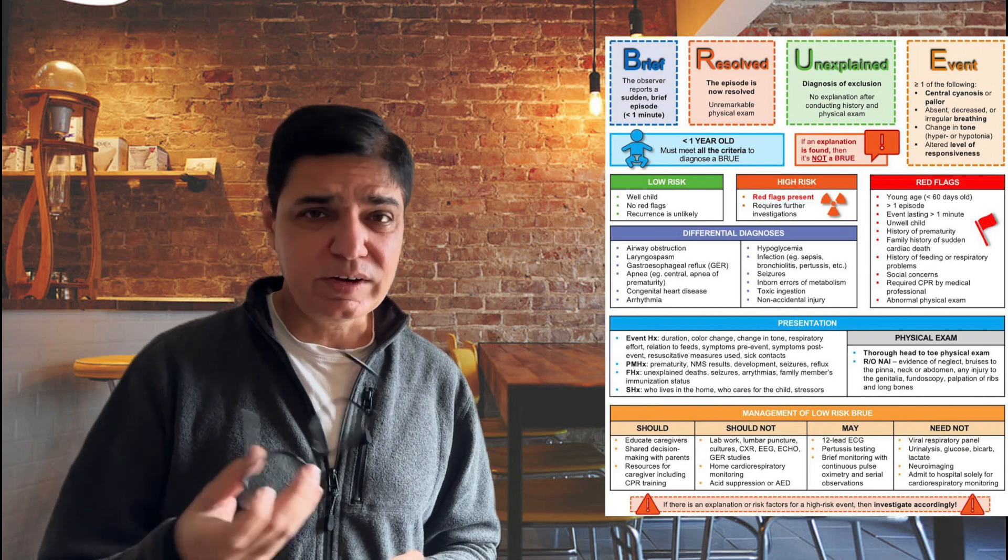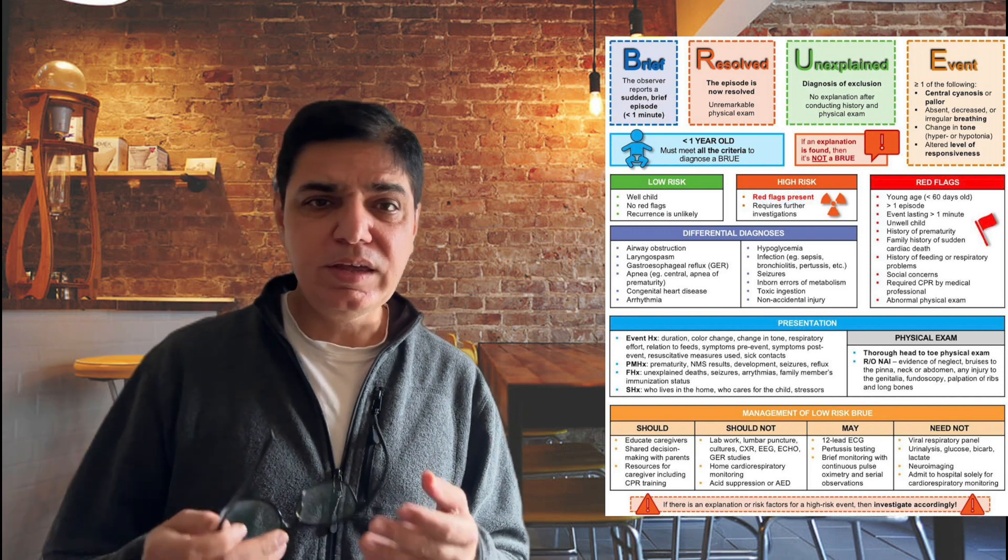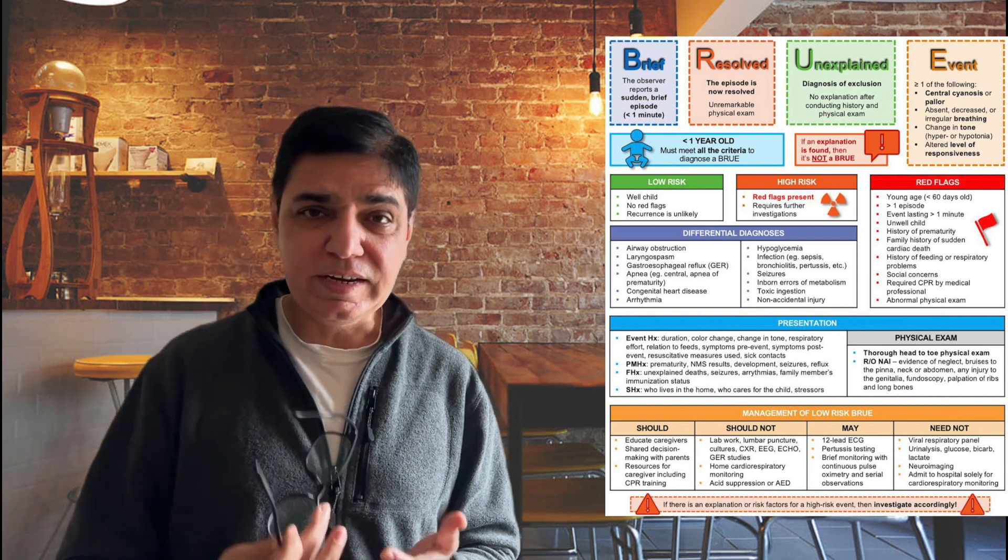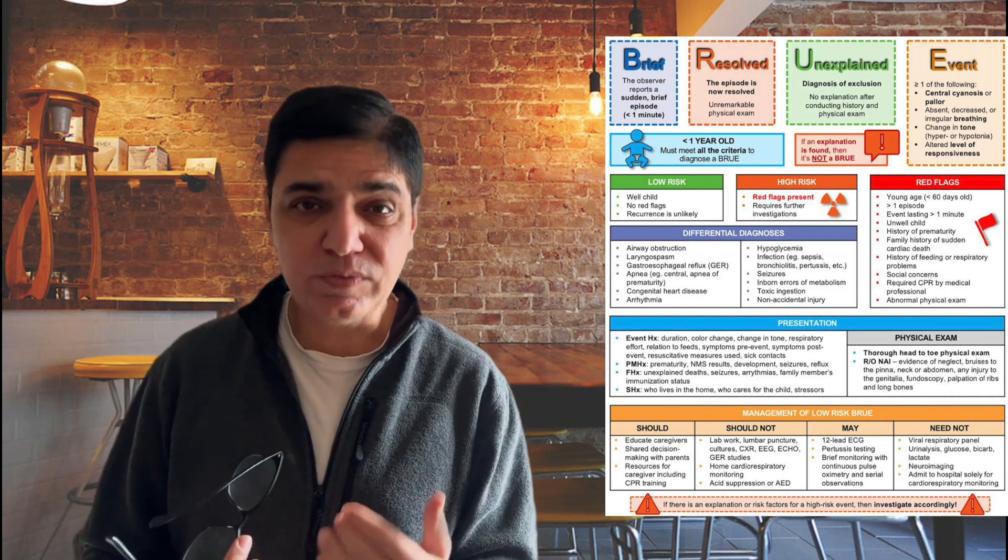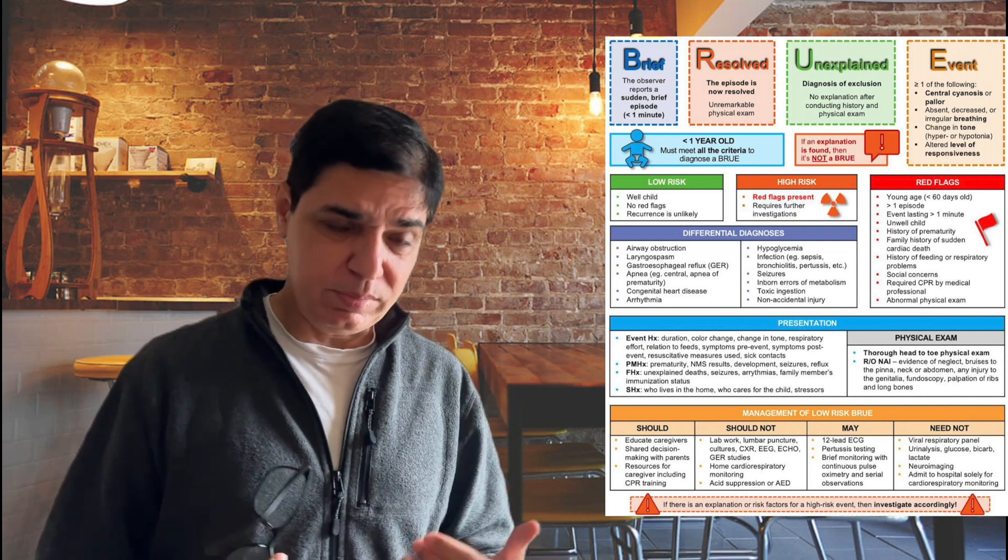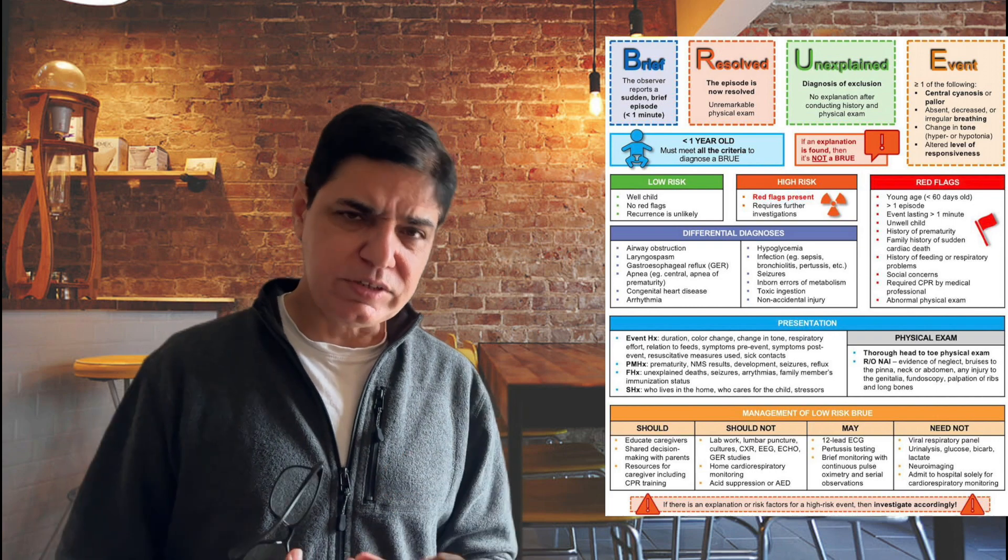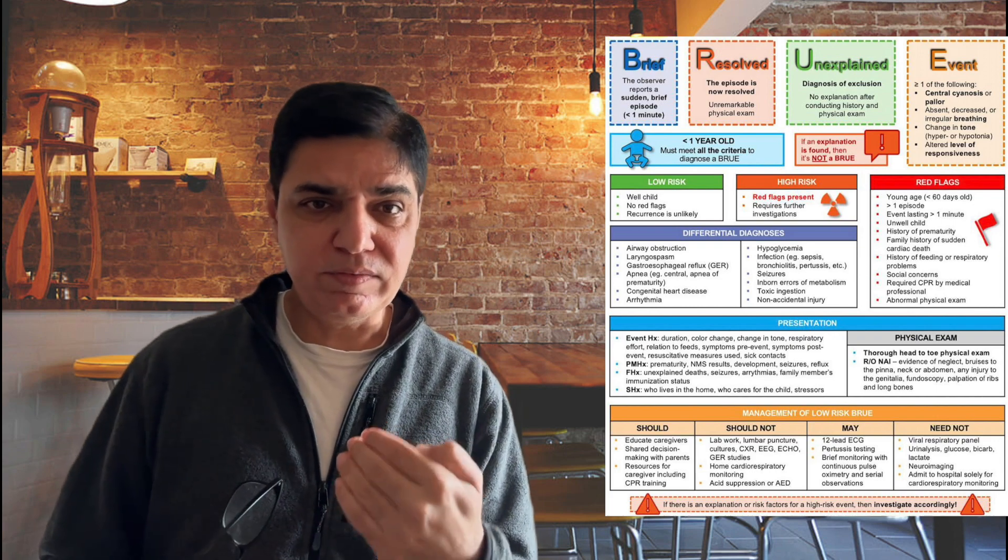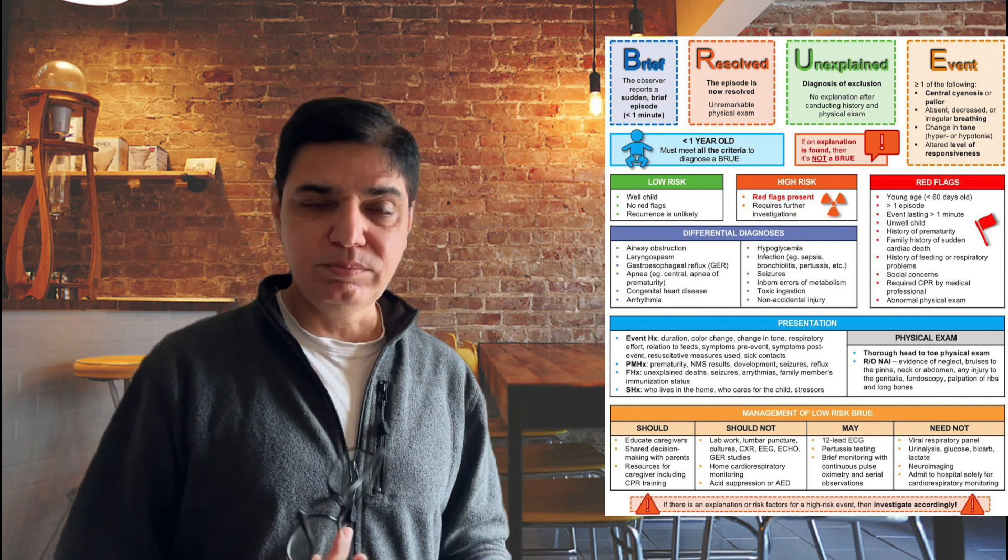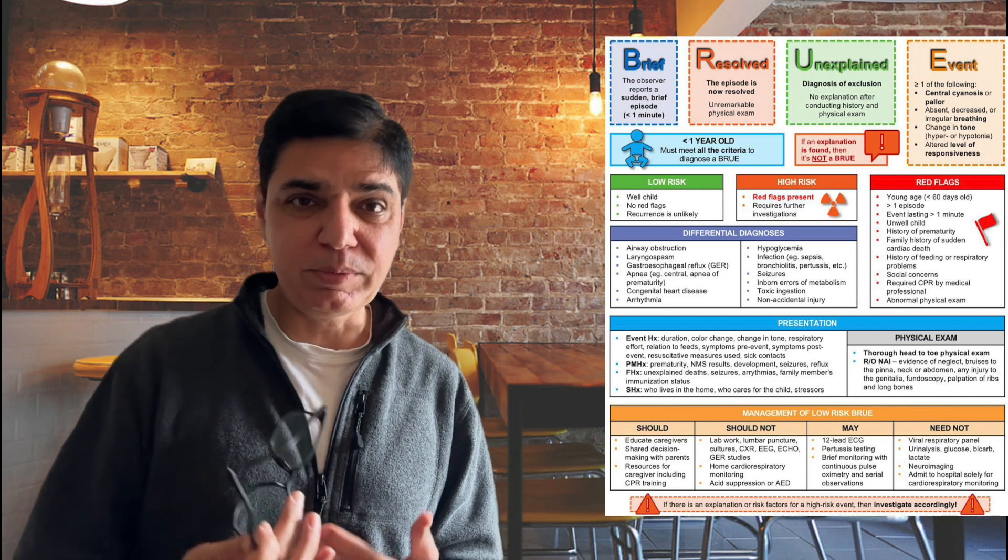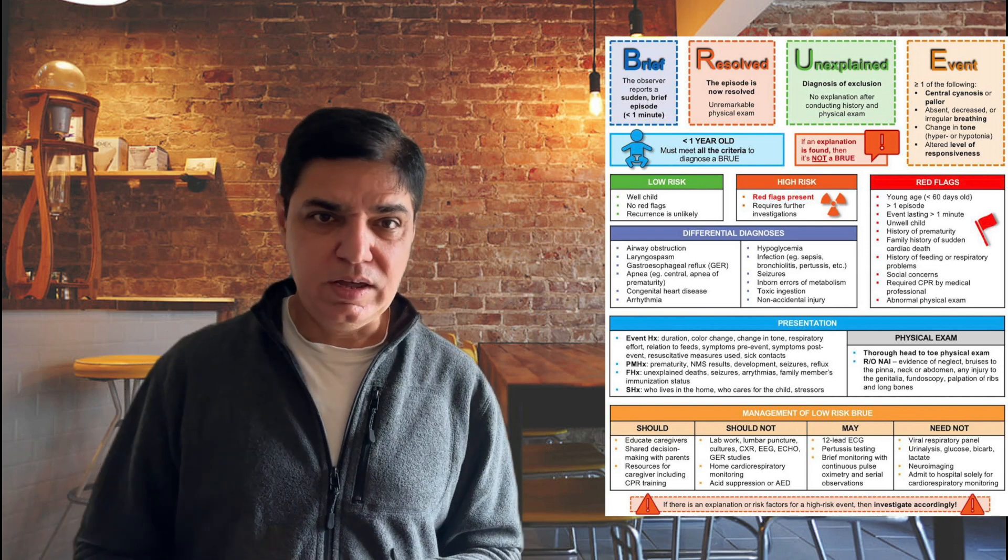Now coming down to the red flags. If the red flags are present, you would always classify it as high risk. So what are those red flags? Remember, red flags can be any of the following. So if you are dealing with a young child, young child means somebody who is less than 60 days of age, less than two months of age. So that is always a red flag. So remember, of any presentation, no matter how well the child looks, if he's less than 60 days of age, that is always a red flag. If the event lasted for greater than one minute, obviously the definition, BRUE is a definition where the event lasts for less than a moment. But if it was an event which lasted for more than a minute, then that is also a red flag.